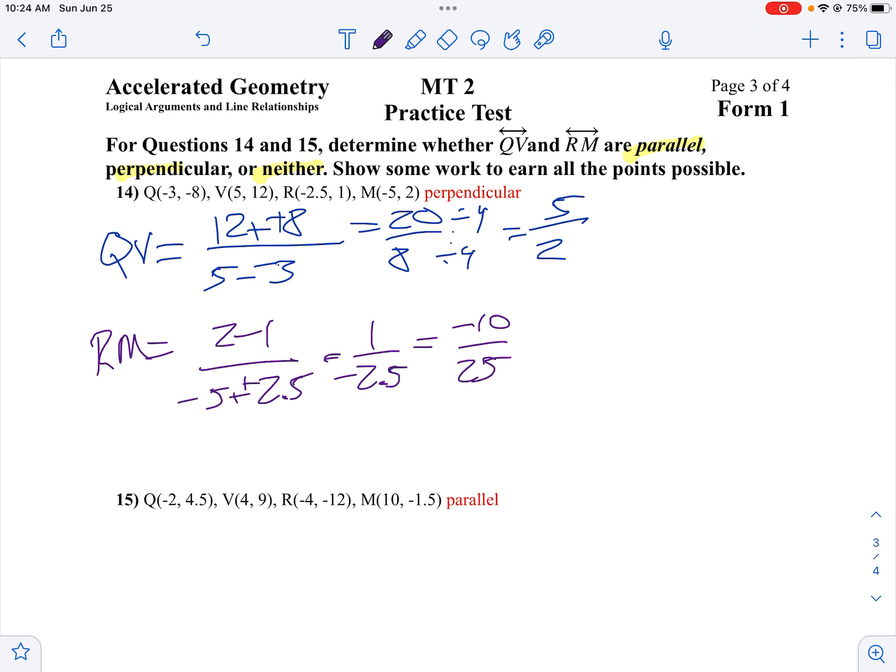Sorry about that. I added in my head, or subtracted instead of added. Okay, then I can divide by 5, can't I? And I get negative 2 over 5. Notice they're opposite reciprocals. So these lines are perpendicular.